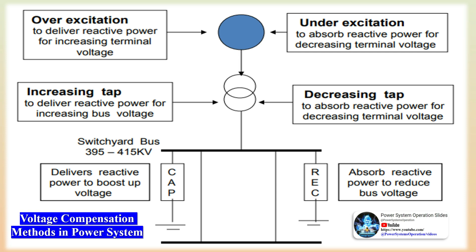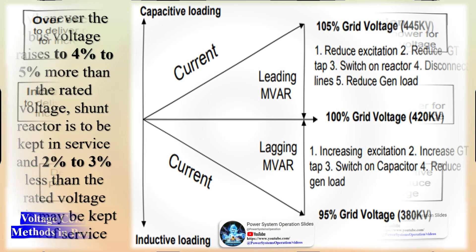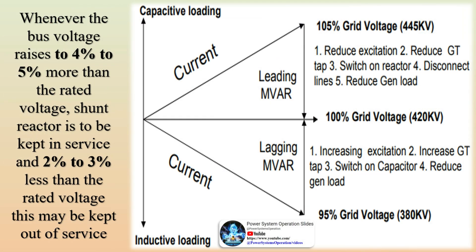Based on construction: single-phase reactors consist of a single coil wound on a core and are used in single-phase systems or as part of a three-phase system. Three-phase reactors consist of three coils connected in delta or star configuration and are used in three-phase systems. Based on impedance: fixed reactors have a fixed impedance for steady-state applications, while some oil-immersed variable reactors are designed to have variable impedance, allowing adjustment to meet varying system requirements and providing flexibility in power system operation.